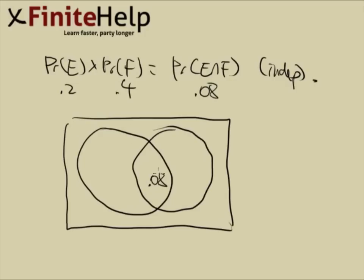The middle is 0.08. Label your sets E and F. Since E is 0.2, that leaves 0.12 in this region.